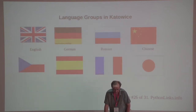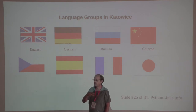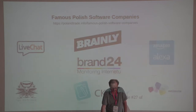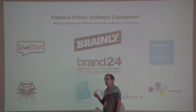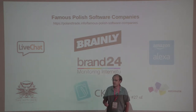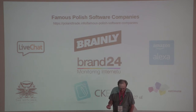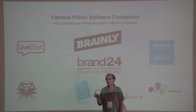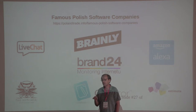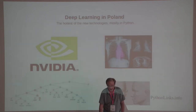In Katowice in particular, there are huge numbers of language groups. On Tuesday I speak French, on Wednesday French and Japanese, on Thursday English and Spanish — just a whole bunch of language groups for the eight or ten major languages. And there are tons of great companies. For example, Amazon Alexa's voice is actually from a Polish company called Ivona, which was bought by Amazon. LiveChat — the little text window that pops up in the lower right-hand corner of your browser — is a Polish company. Also Witcher, Brainly, Brand24, CKEditor — the leading browser-based WYSIWYG HTML editor that you can include for free in your software — and Estimote beacons. A lot of deep learning work there too.